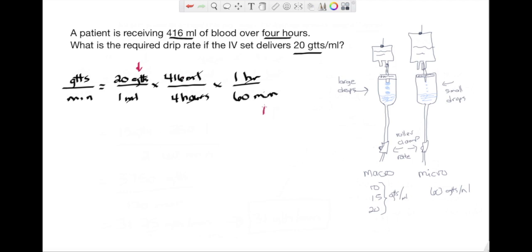So I'm going to carry on with the factoring out here: 20 drops times 416 times 1, divided by 1 times 4 times 60. Pull up the calculator.